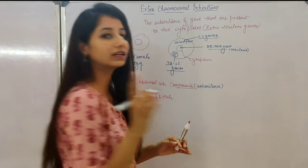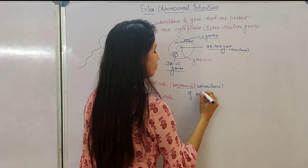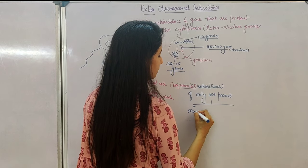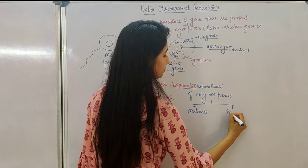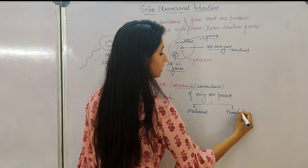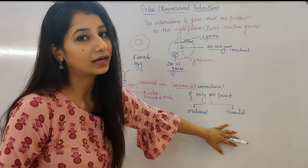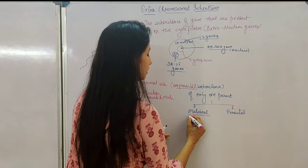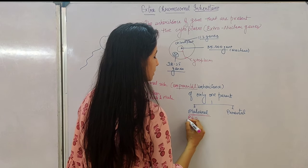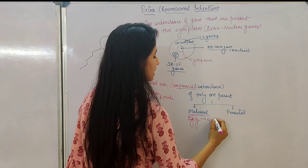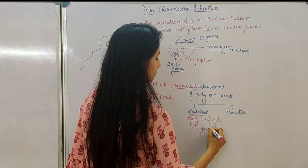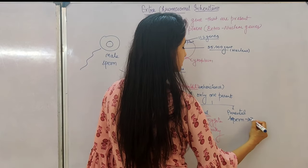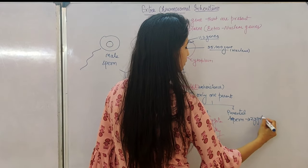The zygote gets the cytoplasm of only one parent. It can be maternal or it can be paternal — maternal inheritance of cytoplasmic inheritance or paternal inheritance of cytoplasmic inheritance. But generally it is maternal inheritance, meaning the cytoplasm of the egg comes into the zygote. Rarely does the sperm cytoplasm take part in the zygote cytoplasm.